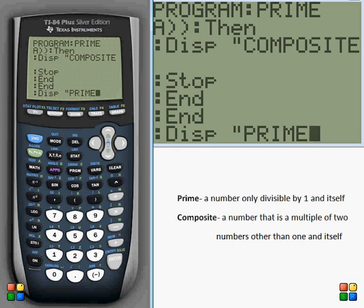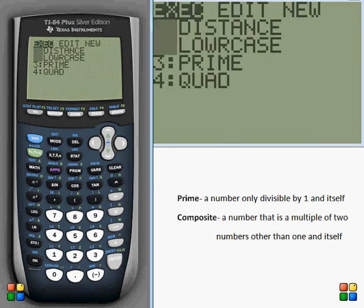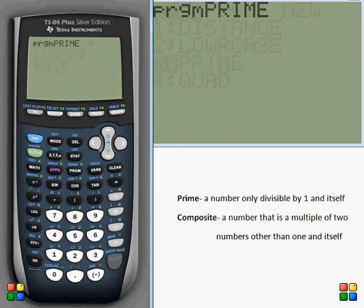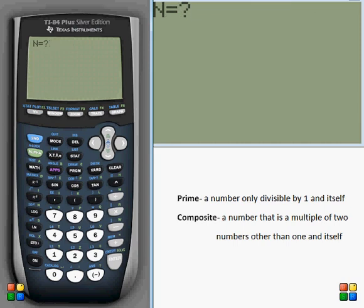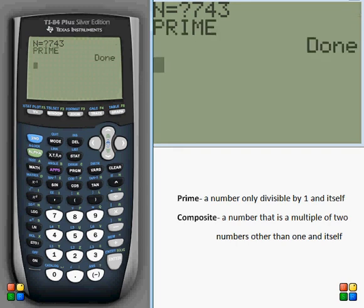So hopefully that makes sense. Let's go ahead and test it now. Go over execute prime. Enter in a number. Let's try 743, which I know for a fact is prime. Look at that. It's returned prime, and that is correct.